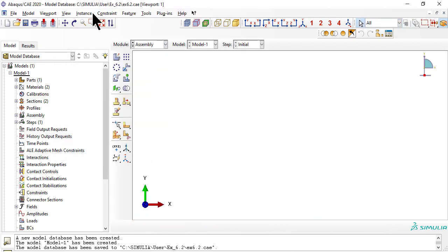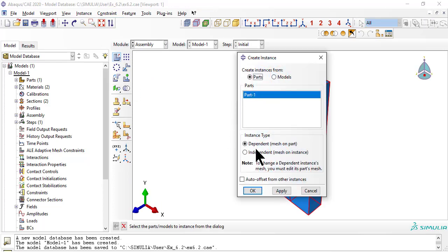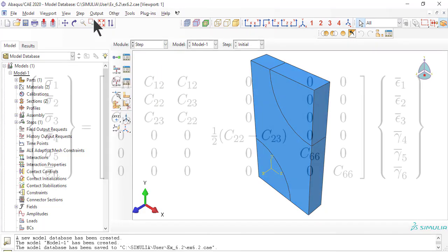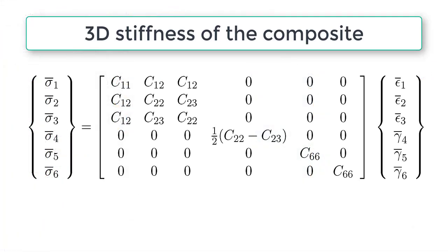In module assembly, we create an independent instance from the only part we have. Now we create static linear perturbation steps, one for each of the first three columns in the stiffness matrix, so that we can later calculate E1, E2, Nu12, Nu23, and G23. See the textbook for details.